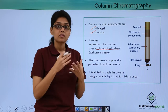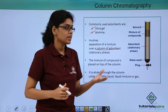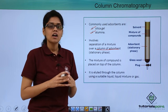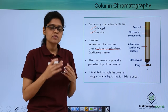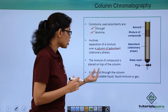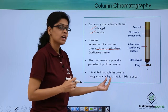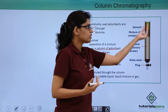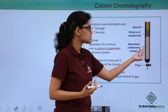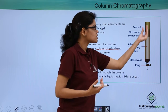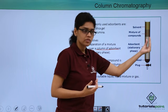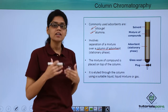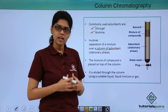The mixture of compounds that we need to separate is placed on top of the column. Once this is done, the mobile phase — which could be a single liquid, a mixture of liquids, or even a gas — is eluted or passed through the column, so that the mixture of compounds, along with the mobile phase, gets eluted and separated via its interaction with the adsorbent.